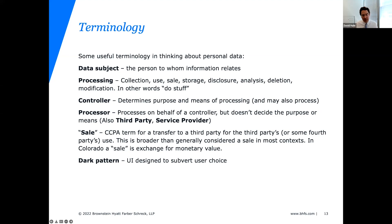California's definition of sale essentially means giving information to another party in a way that doesn't strictly control how they use it — and you have to give people an opportunity to opt out of that. Another concept becoming very important is the dark pattern — where you're pushing the user in one direction or another using subtle cues in your user interface. Regulators are very concerned about this and are willing to call things dark patterns when in reality they may simply be mistakes. It's easy to make a disclosure error and then have it come back as an accusation of engaging in a dark pattern.